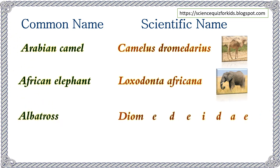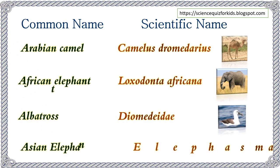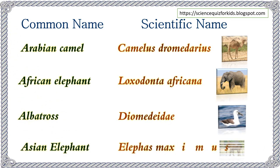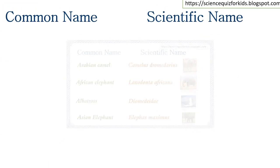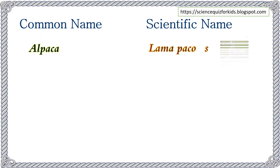Albatross — scientific name Albatrus dio mediatic. Asian Elephant — Elephas maximus. Alpaca — Lama pacos.